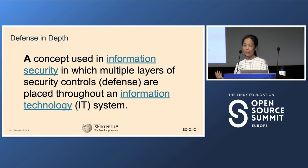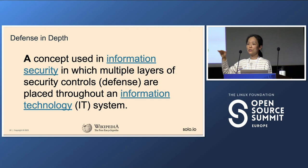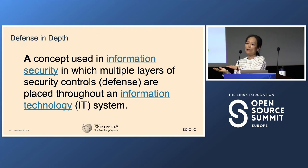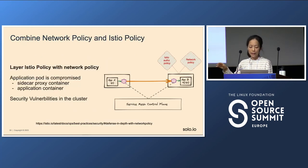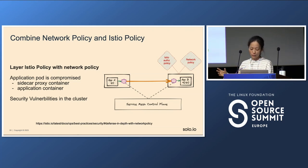Defense in depth is a concept commonly used in security where you layer multiple layers together. CNI provides layer three and layer four; a service mesh like Istio provides layer seven. So if you have a security vulnerability in Istio — maybe in your Envoy proxy — your layer seven might be a little bit weak, but potentially your layer three and layer four could pick up the slack. If one layer fails, it can fall back to the other layer to still be enforced.